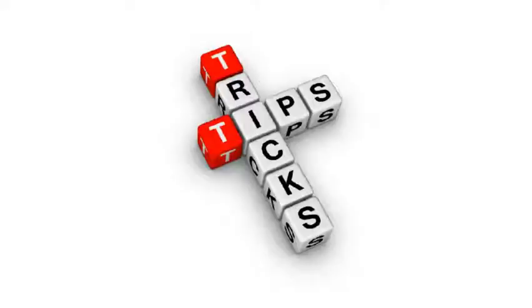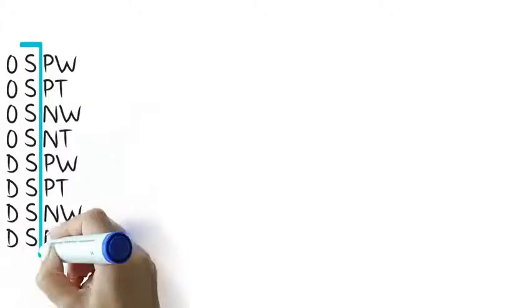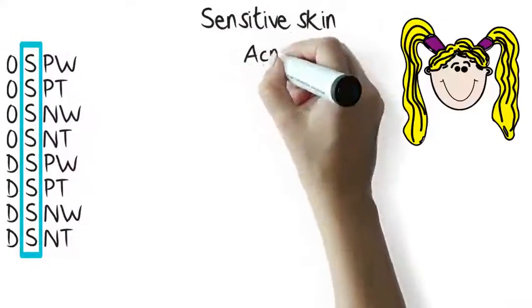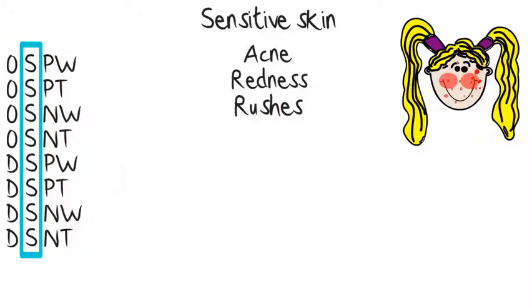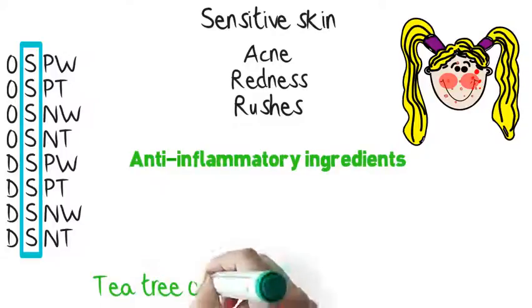So, here are some tips and tricks for skin types. If you have an S in your 4 letter code, so if your skin is sensitive, you are probably prone to acne, redness and rashes. To help your skin, look for cosmetics with anti-inflammatory ingredients such as tea tree oil, marigold and chamomile.